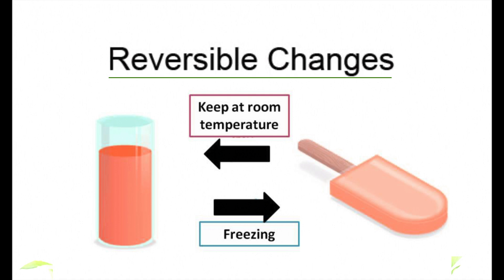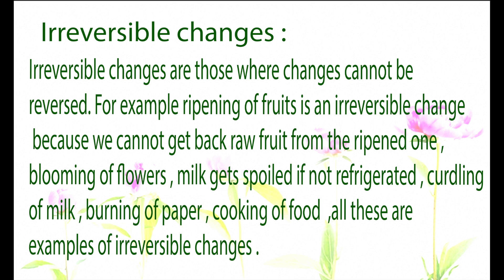Similarly with ice cream: when flavored milk is frozen we get ice cream, and when it is heated again we get the flavored milk back. So in reversible changes, we get back the same product after following some processes — the result can be reversed.